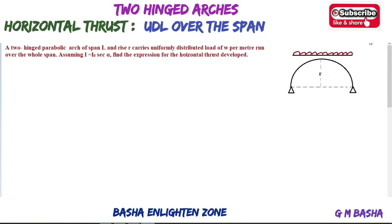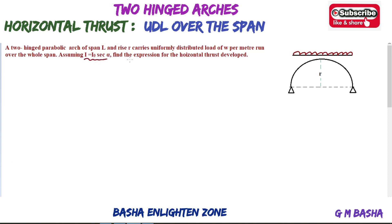Hello friends, in this lecture I would like to explain another example based on two-hinge arches. A two-hinge parabolic arch of span L and rise R carries a uniformly distributed load of W per meter run over the whole span. Assuming I equal to I-naught secant alpha, find the expression for the horizontal thrust developed.